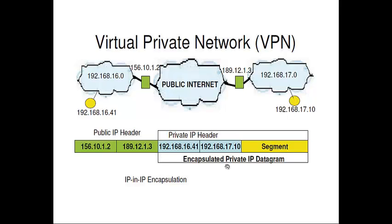This router encapsulates — hides or abstracts — the whole IP datagram inside another IP header that has the public IP addresses of the two gateway routers. For the routers forwarding in the internet, it appears as if the packet is going from one gateway router's public IP to the other. For security purposes, the encapsulated IP datagram can even be encrypted, so routers forwarding it in the internet can't see what's inside. Once it arrives at the destination gateway router, that router removes the outer IP header, decrypts the inner IP datagram, and forwards it to the actual destination. The outer IP header carries public IP addresses so that internet routers can forward the packet.